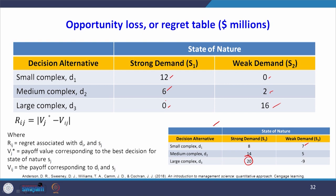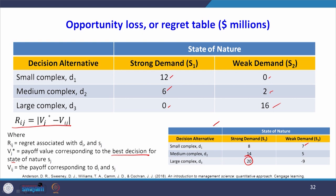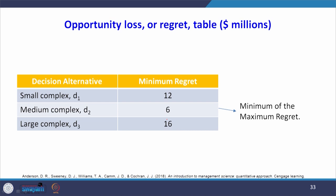The regret formula is Rij = Vj* - Vij, where Vj* is the best payoff for state j and Vij is the payoff for alternative i and state j. From the regret table, for D1 the maximum regret is 12, for D2 it is 6, and for D3 it is 16. Using minimax — minimum of the maximum regrets — the minimum is 6, corresponding to D2. So the minimax regret recommendation is medium complex (D2).